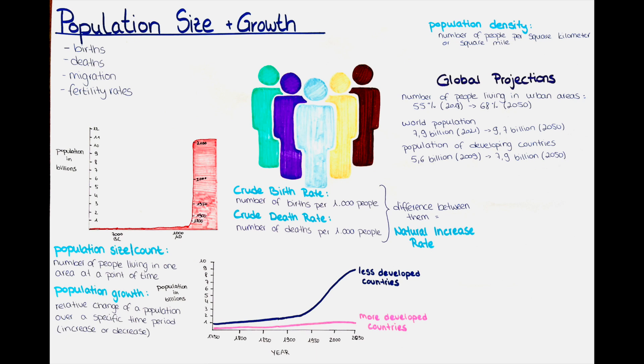Japan has one of the highest life expectancies globally, but it also has a relatively high crude death rate due to its aging population. In 2020, its crude death rate was estimated to be around 11 deaths per 1,000 population.